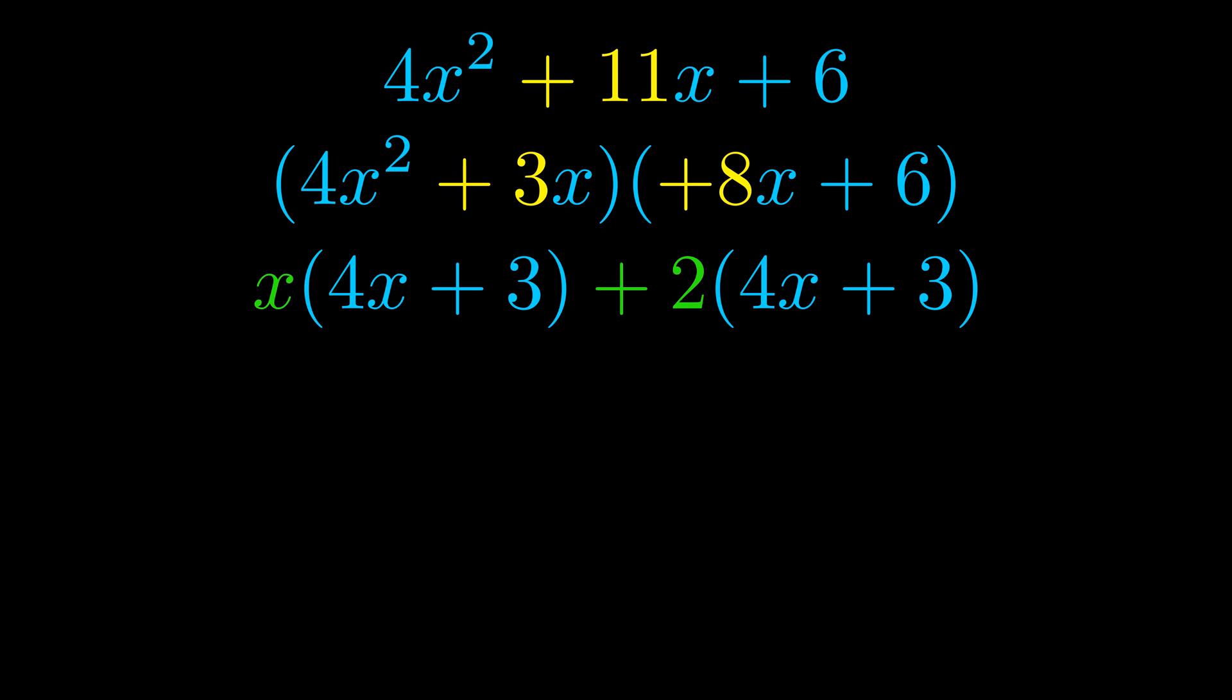Notice also how what remains inside of the parentheses is the same in both cases. The blue values are the same. Those blue values will become one of our factors and we will combine the two green values, the GCFs that we pulled out, to get the other one. And that is our fully factored equation.